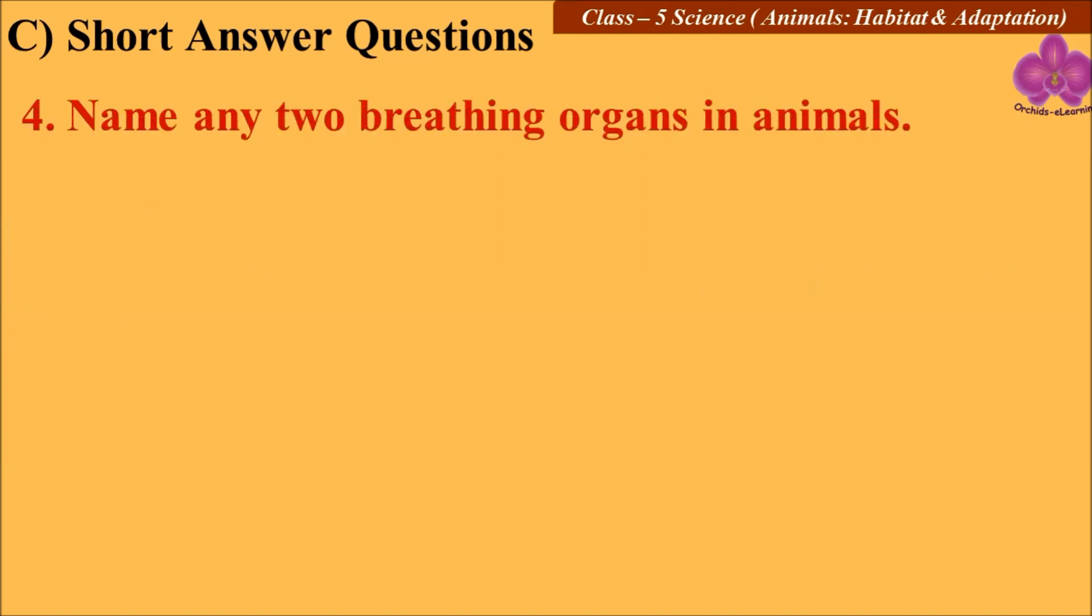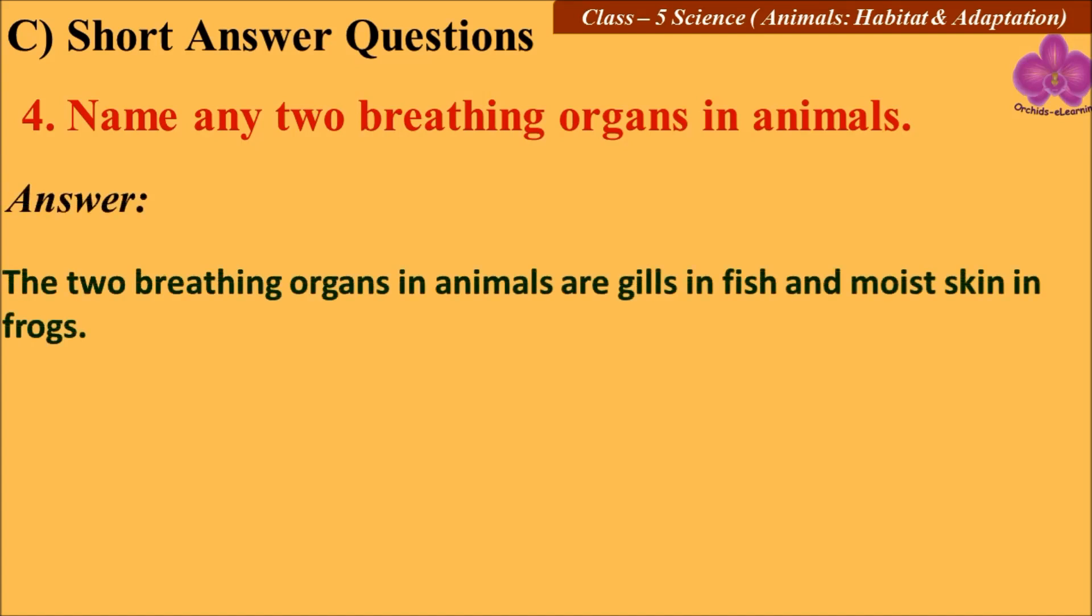Question number four: Name any two breathing organs in animals. The two breathing organs in animals are gills in fish, because fish use their gills for breathing, and moist skin in frogs.